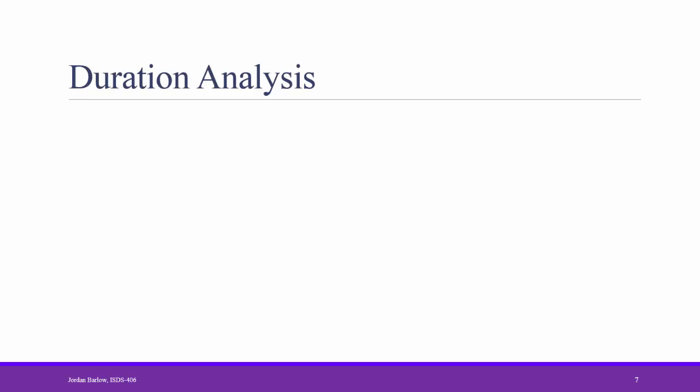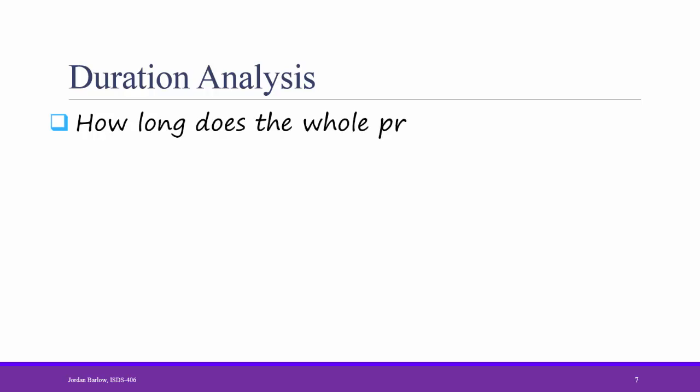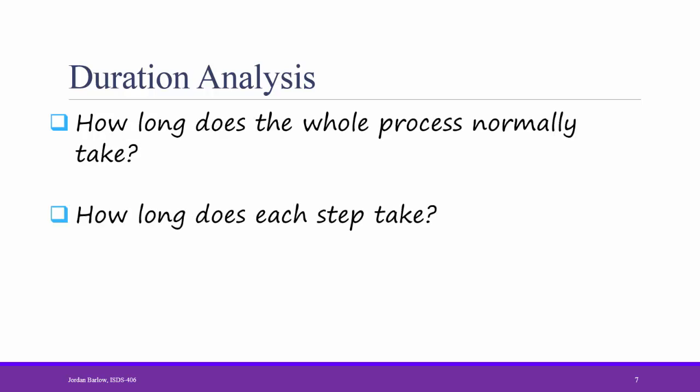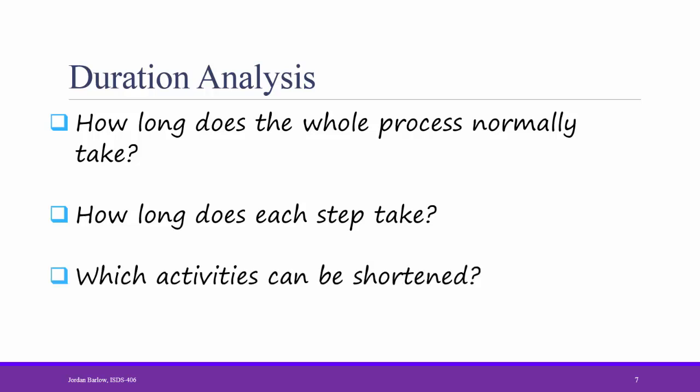The next strategy is duration analysis. In duration analysis, the analyst finds out how long the whole process normally takes, and then how long each individual step takes. The analyst then asks which activities can be shortened. In our example, the analyst would find out how long it takes for customers to meet with a loan officer, how long it takes them to submit the paper form, how long it takes for a credit check to be run, and so forth. Then the analyst, together with the help of the organization, tries to find ways to improve the process by shortening one or more of these activities.